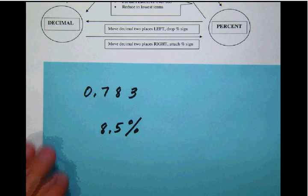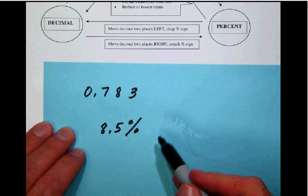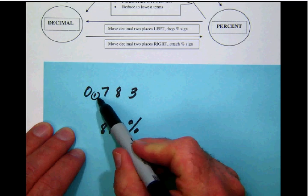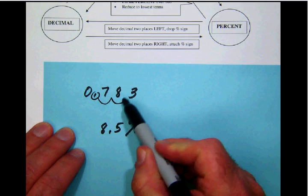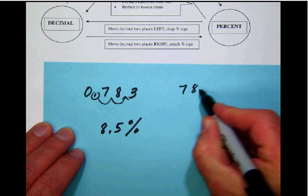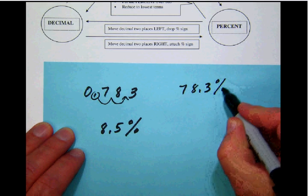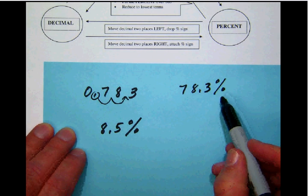So from a decimal to a percent, move the decimal two places to the right. So we notice that the decimal is here. Count two places. That's one. That's two. So we will rewrite that as 78.3. And then we will attach the percent sign. So our first answer, 78.3 percent.